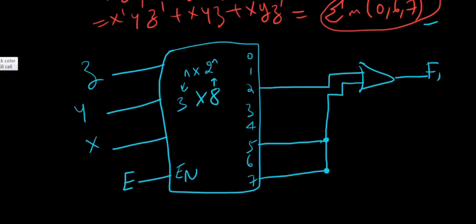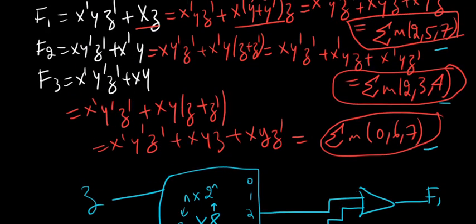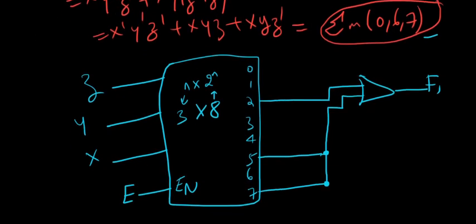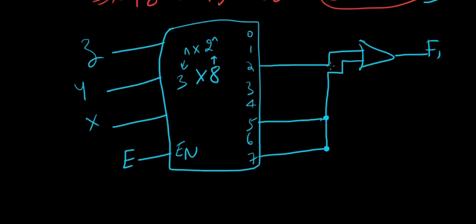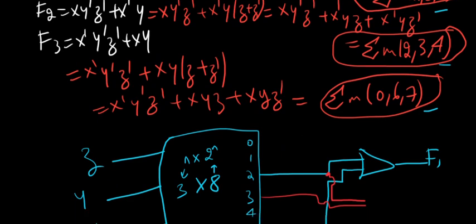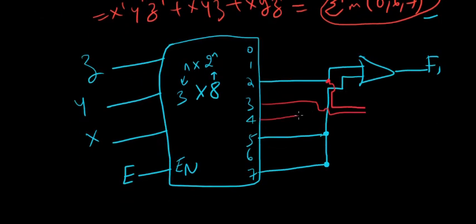For F2 we have minterms 2, 3, and 4. Output 2 is shared with F1, and we add outputs 3 and 4, OR-ing them together to produce F2.